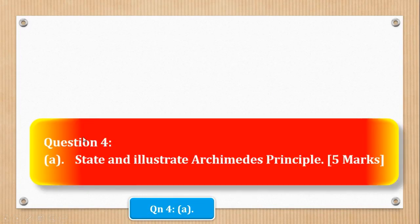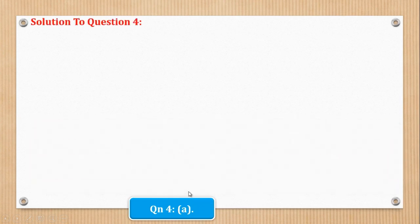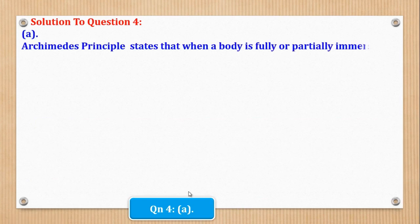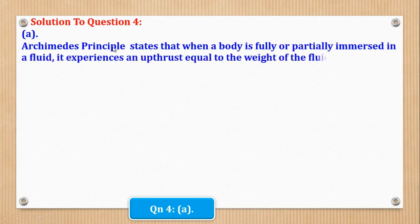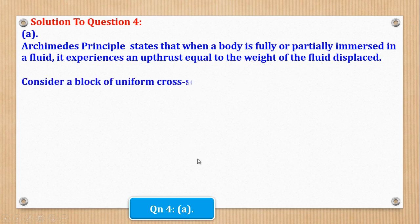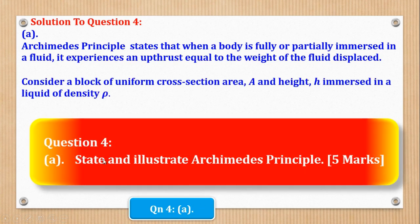We shall start with Question 4, Part A. Question 4, Part A says: state and illustrate Archimedes' Principle, and they give it 5 marks. Archimedes' Principle states that when a body is fully or partially immersed in a fluid, it experiences an upthrust equal to the weight of the fluid displaced. We have stated Archimedes' Principle and now we have to illustrate it.